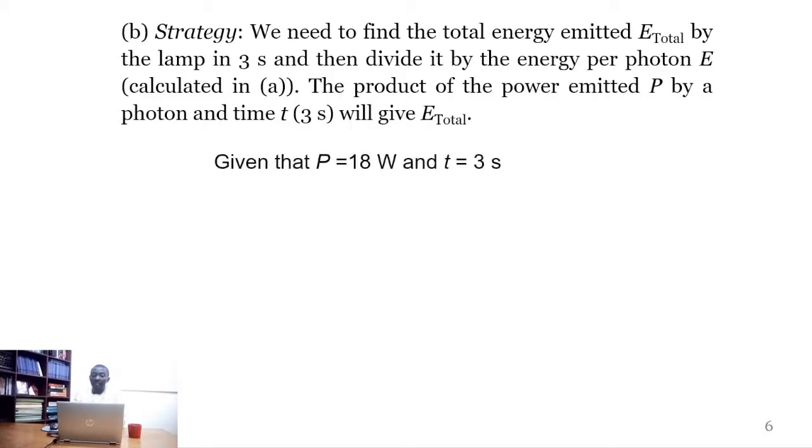Now given that the power emitted by the fluorescent lamp is 18 watts, and this happens in 3 seconds, we multiply the power by time to obtain the total energy emitted by the photons.